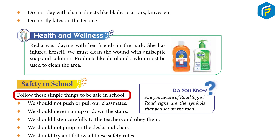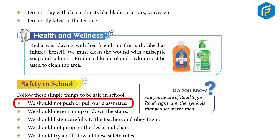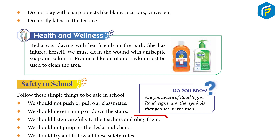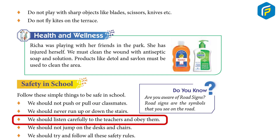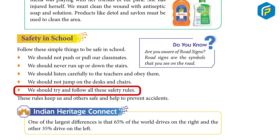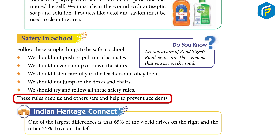Safety in school: Follow these simple things to be safe in school. We should not push or pull our classmates. We should never run up or down the stairs. We should listen carefully to the teachers and obey them. We should not jump on the desks and chairs. We should follow all the safety rules — these rules keep us and others safe and help to prevent accidents.